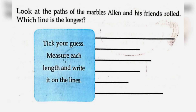Look at the paths of the marbles Alan and his friends rolled. Which line is the longest? Tick your guess, measure each length, and write it on the lines. My guess will be the 1st line.